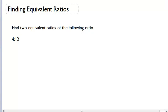Finding equivalent ratios. This example asks us to find two equivalent ratios. An equivalent ratio is one that represents the same exact ratio, just in different terms.